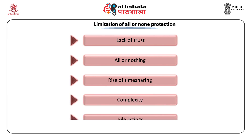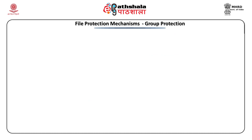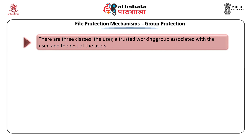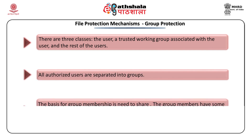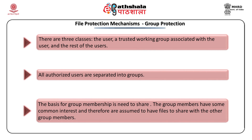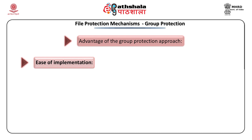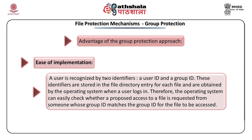File protection mechanisms include group protection. There are three types of users: other users, the trusted working group associated with the user, and the rest. All authorized users are separated into groups. Group members have a common interest and can share files with other members of the group. Access rights can be read, write, execute, and delete. A key advantage of the group protection approach is ease of implementation. There is a user ID and a group ID — the user ID identifies the user and the group ID identifies the group.